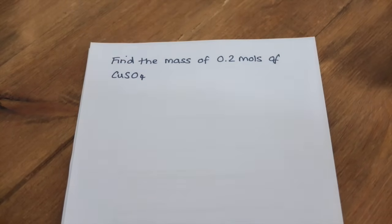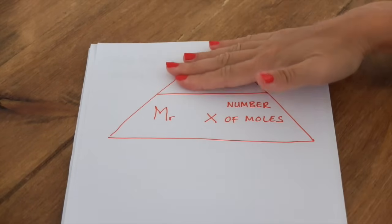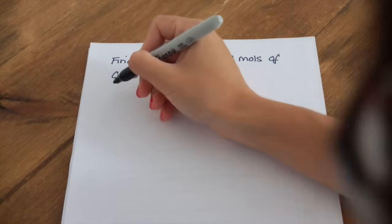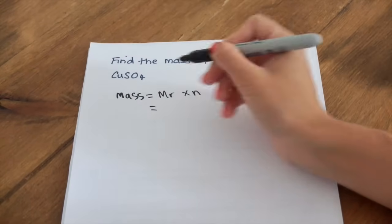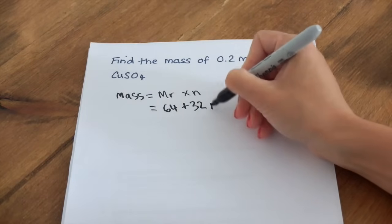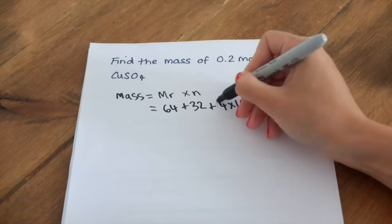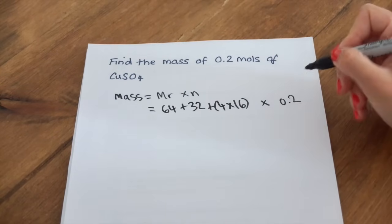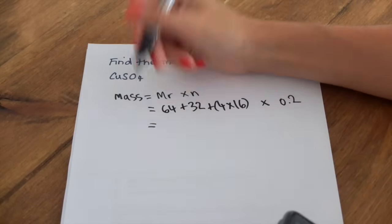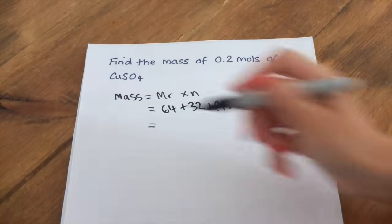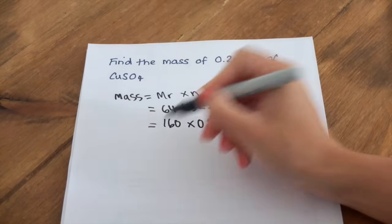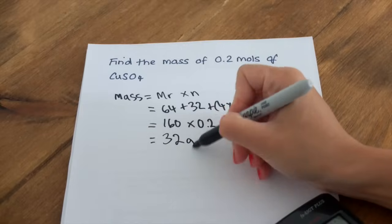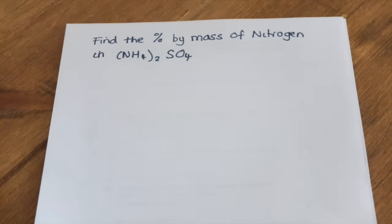In this slightly different question we're going to find the mass of 0.2 moles of copper sulfate using the formula triangle. Covering mass, we know we need to do Mr × number of moles. The Mr of copper sulfate: copper is 64 + sulfur is 32 + four lots of oxygen (4 × 16 = 64), giving an Mr of 160. Then we multiply by 0.2, and the answer is 32 grams.